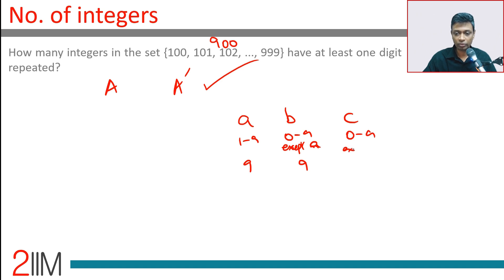C can go from 0 to 9, except A and B, 8 possibilities. 9 into 9 into 8, 81 into 8, 648.